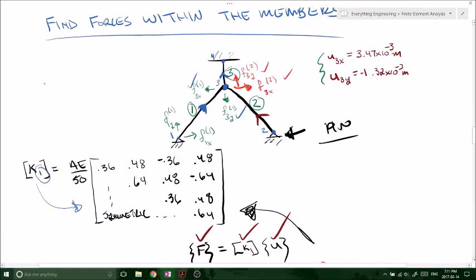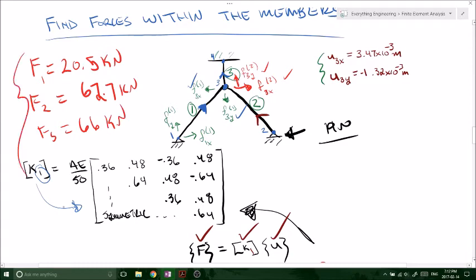So what we've done, we've solved for the forces in each member. Each member. So to summarize, F1 was 20.5 kilonewtons. F2 was 67, nope, 62.7 kilonewtons. And F3 was 66 kilonewtons. And that was it.